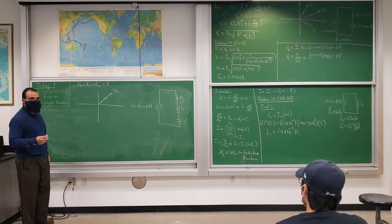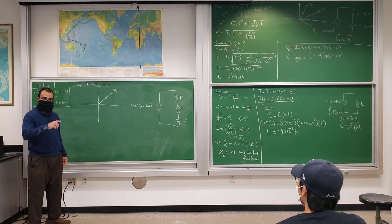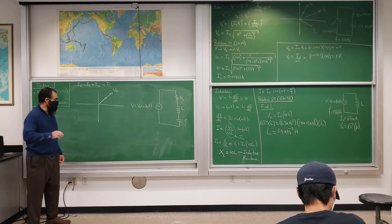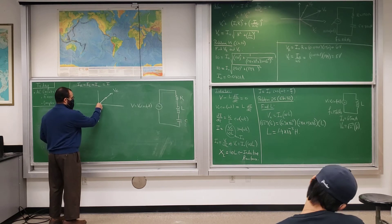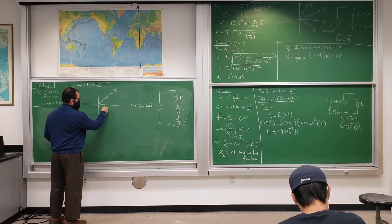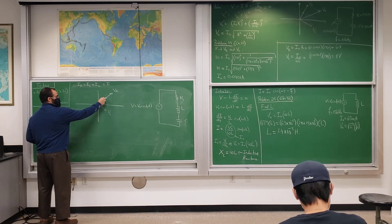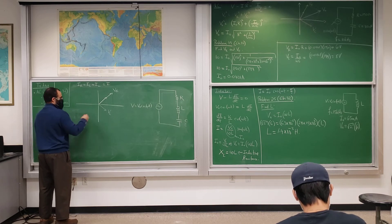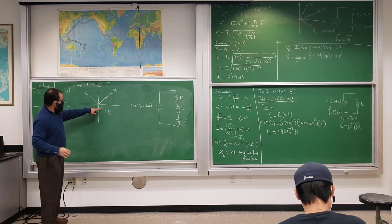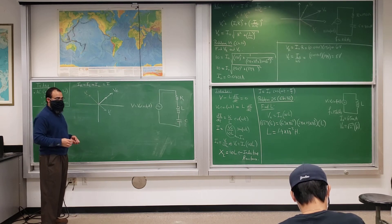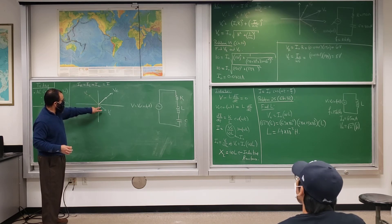The voltage across the capacitor is behind the current by 90 degrees — that's Vc pointing downward. The voltage across the inductor is ahead of the current by 90 degrees — that's VL pointing upward. Since they're at 180 degrees to each other, they partially cancel. You can draw one longer than the other — there's a special case where they cancel completely.